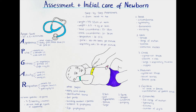P is for Pulse. Newborns and infants have a higher pulse than adults. If it's over 100 that's good and equals two points. 60 to 100 is one point, and less than 60 is zero points.